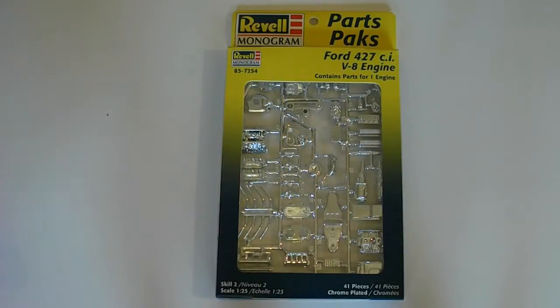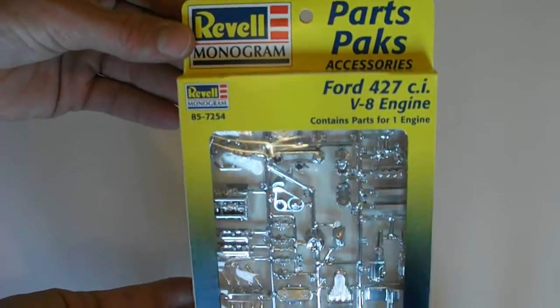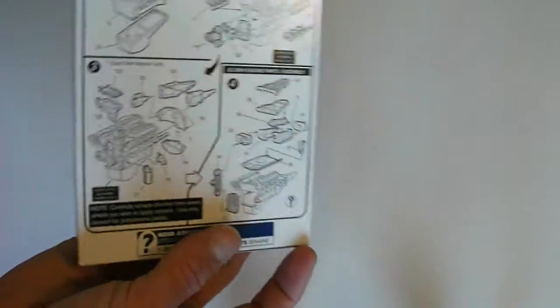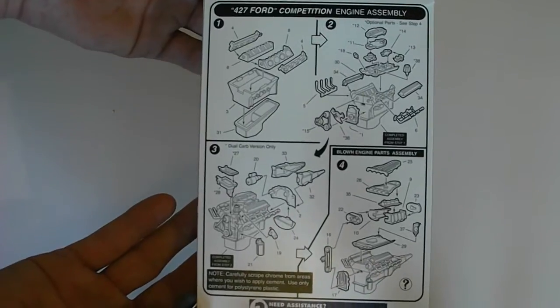Here's the Ford 427 cubic inch V8 engine. It features 41 parts, skill level 2, scale 1/25, 7254 for the model number. Outside the box, take a look real quick here. Got the nice window there as all the other ones do, show off what you're getting. Here's the instructions. Nice exploded view.